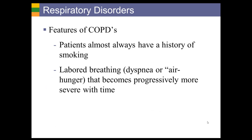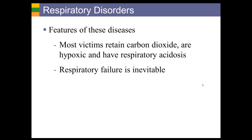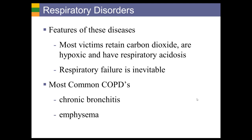In most cases there is respiratory acidosis — high levels of carbon dioxide and low blood pH because they're not able to move sufficient amounts of air through their lungs. This is a chronic condition that typically worsens over time; if they don't die from something else, they will eventually die from respiratory failure. The most common COPDs we'll discuss are chronic bronchitis and emphysema.